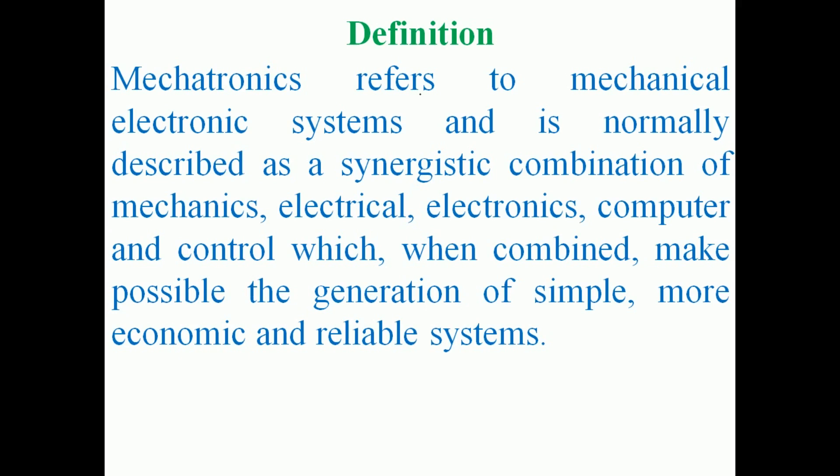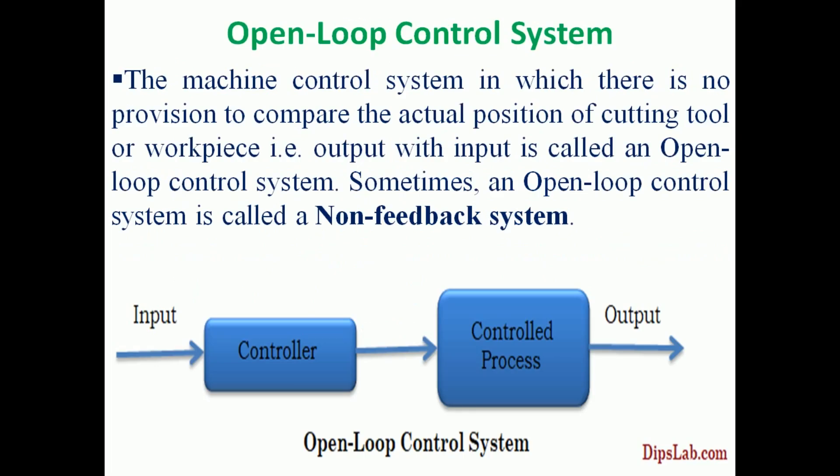Nowadays, computer numerical control machines are all mechatronics systems, and many other mechanical systems are mechatronics systems only. Next, open loop control system: the machine control system in which there is no provision to compare the actual position of the cutting tool or workpiece — that is, output with input — is called open loop control system.